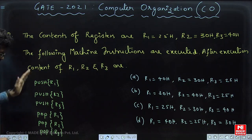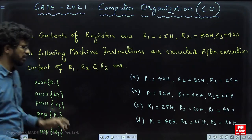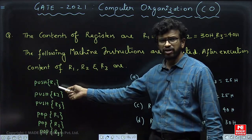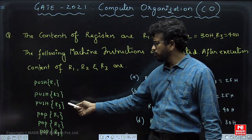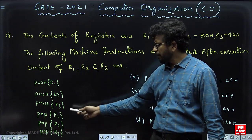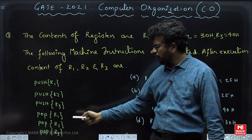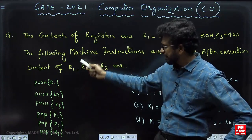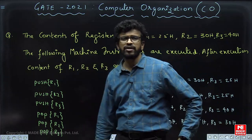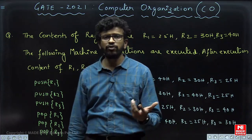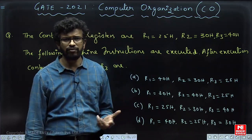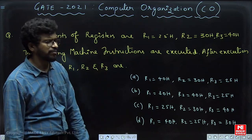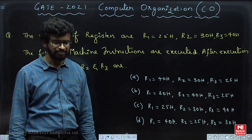The instructions executed are: PUSH R1, PUSH R2, PUSH R3, POP R1, POP R2, and POP R3. For this set of instructions, what is the final value of R1, R2, and R3? These are the different options given.